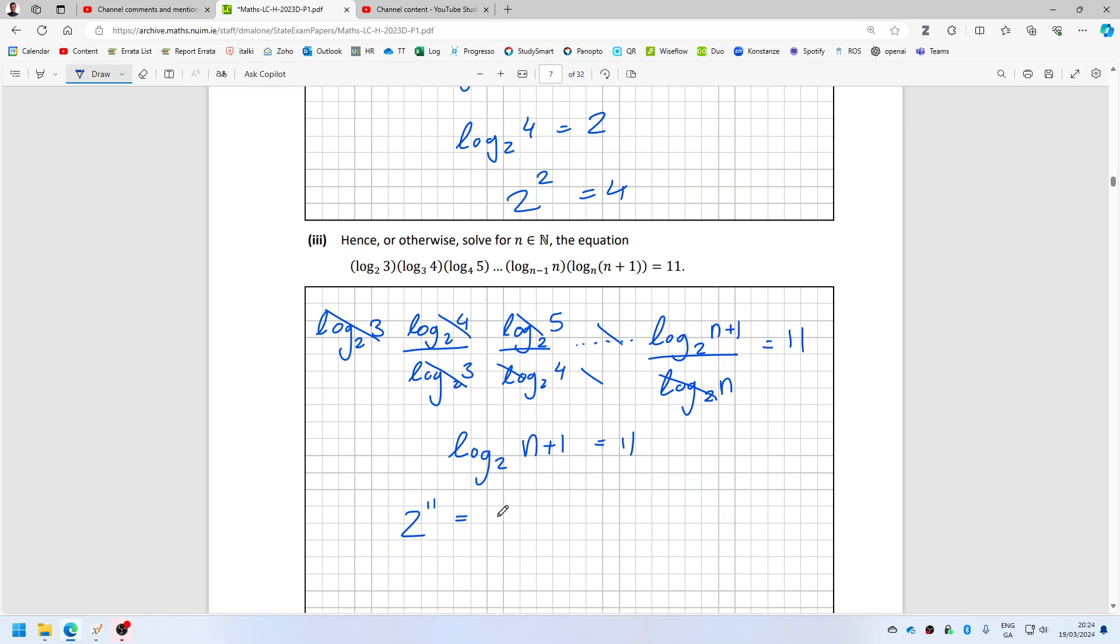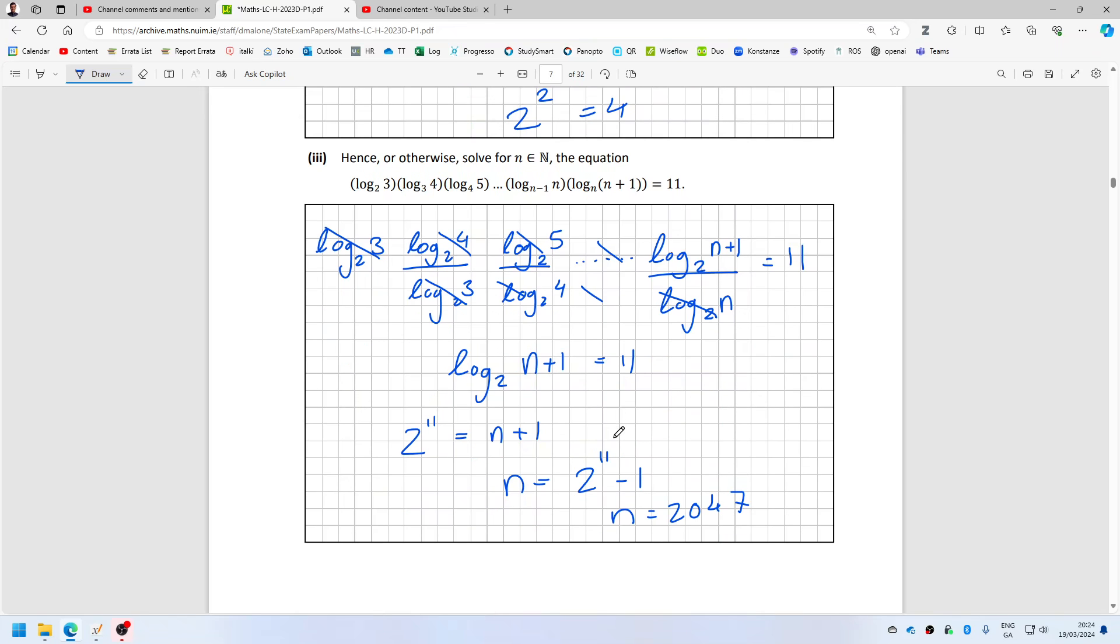Equals n plus 1, so n is 2^11 minus 1. And 2^11 minus 1, so that's n equal to 2047.